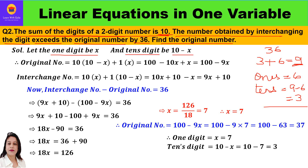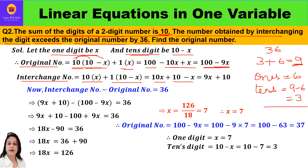To find the original number, multiply the tens digit by 10 and the one's digit by 1: 10 × (10 − x) + 1 × x = 100 − 10x + x = 100 − 9x. This is our original number. For the interchange number, we swap the digits: 10 × x + 1 × (10 − x) = 10x + 10 − x = 9x + 10. So the interchange number is 9x + 10.